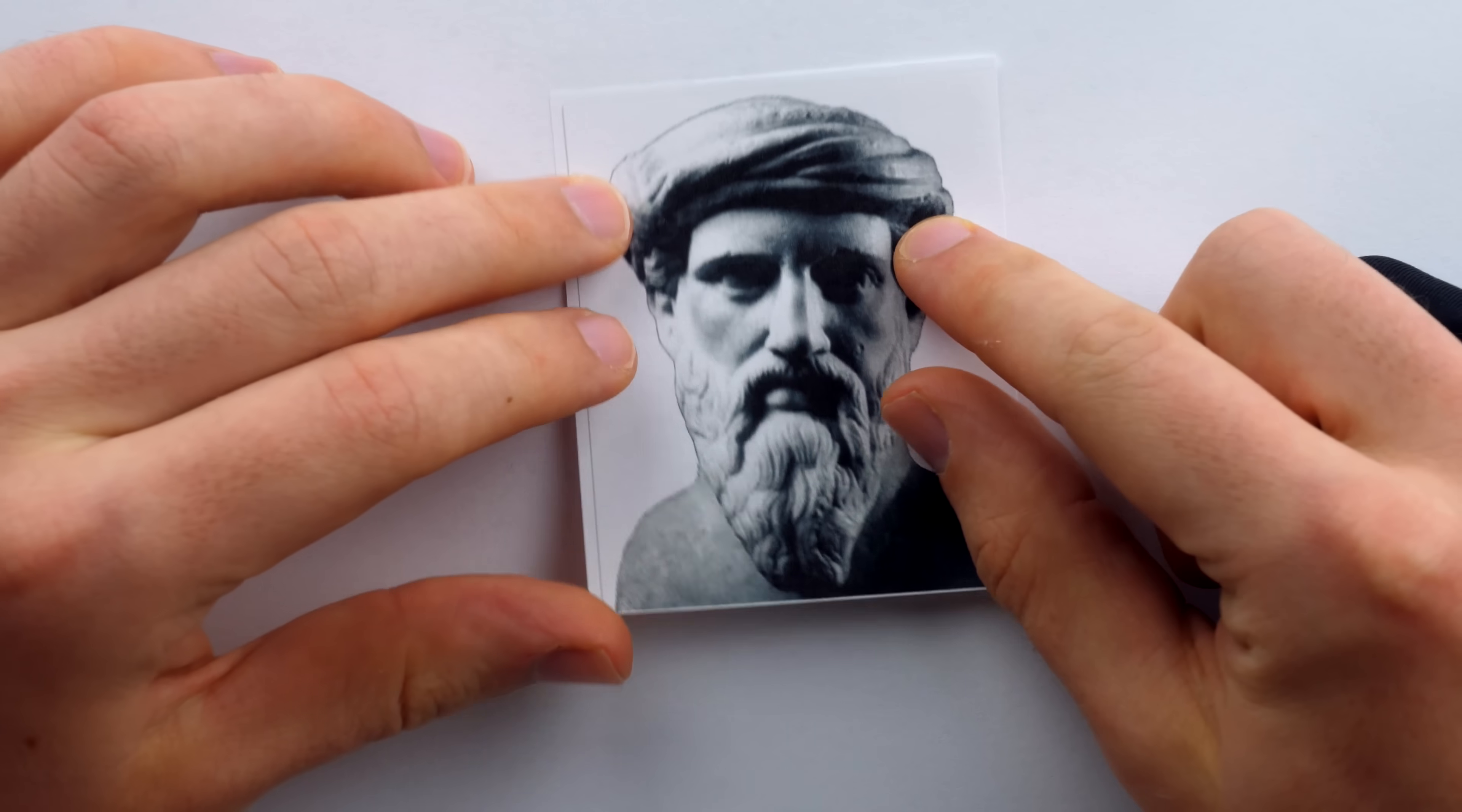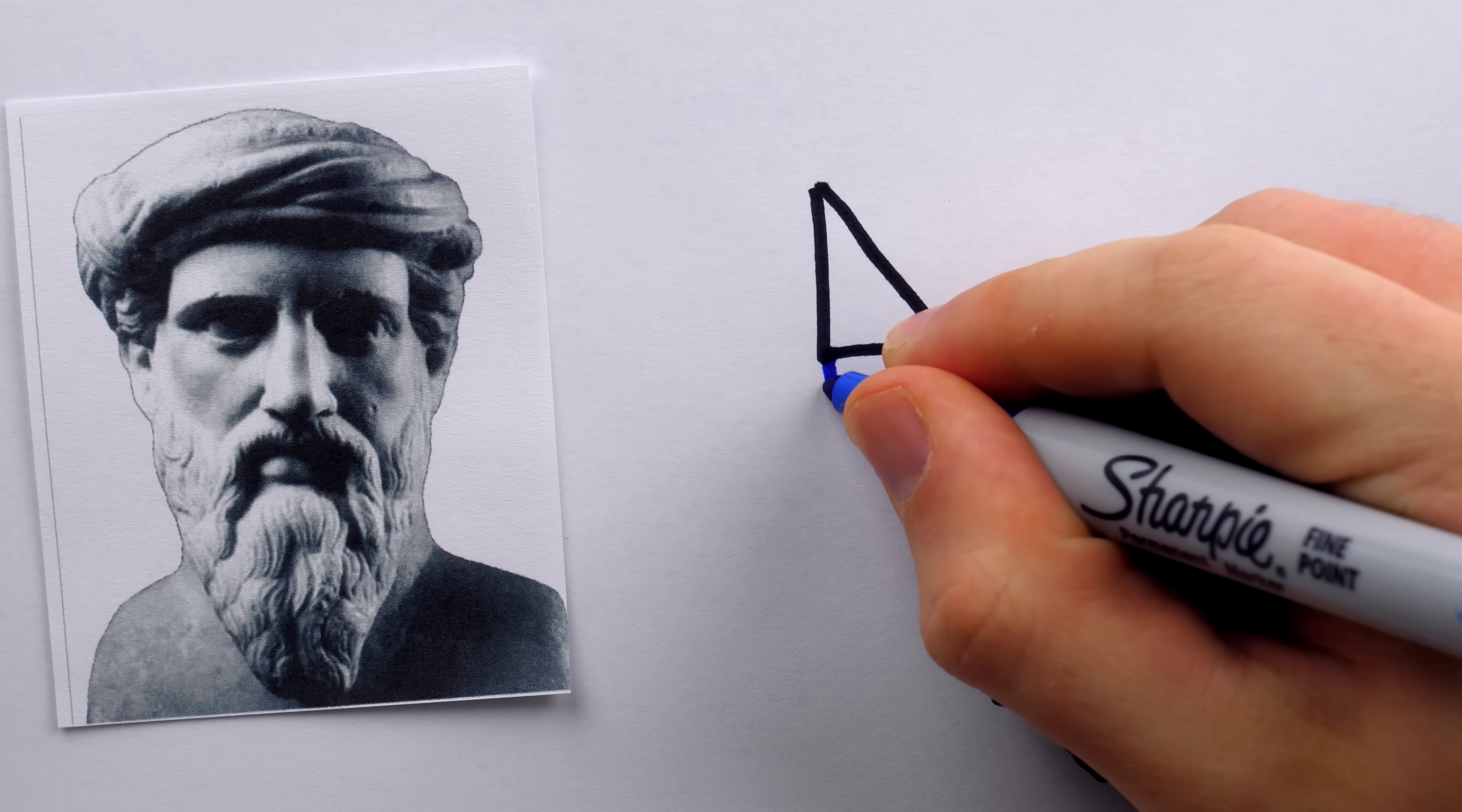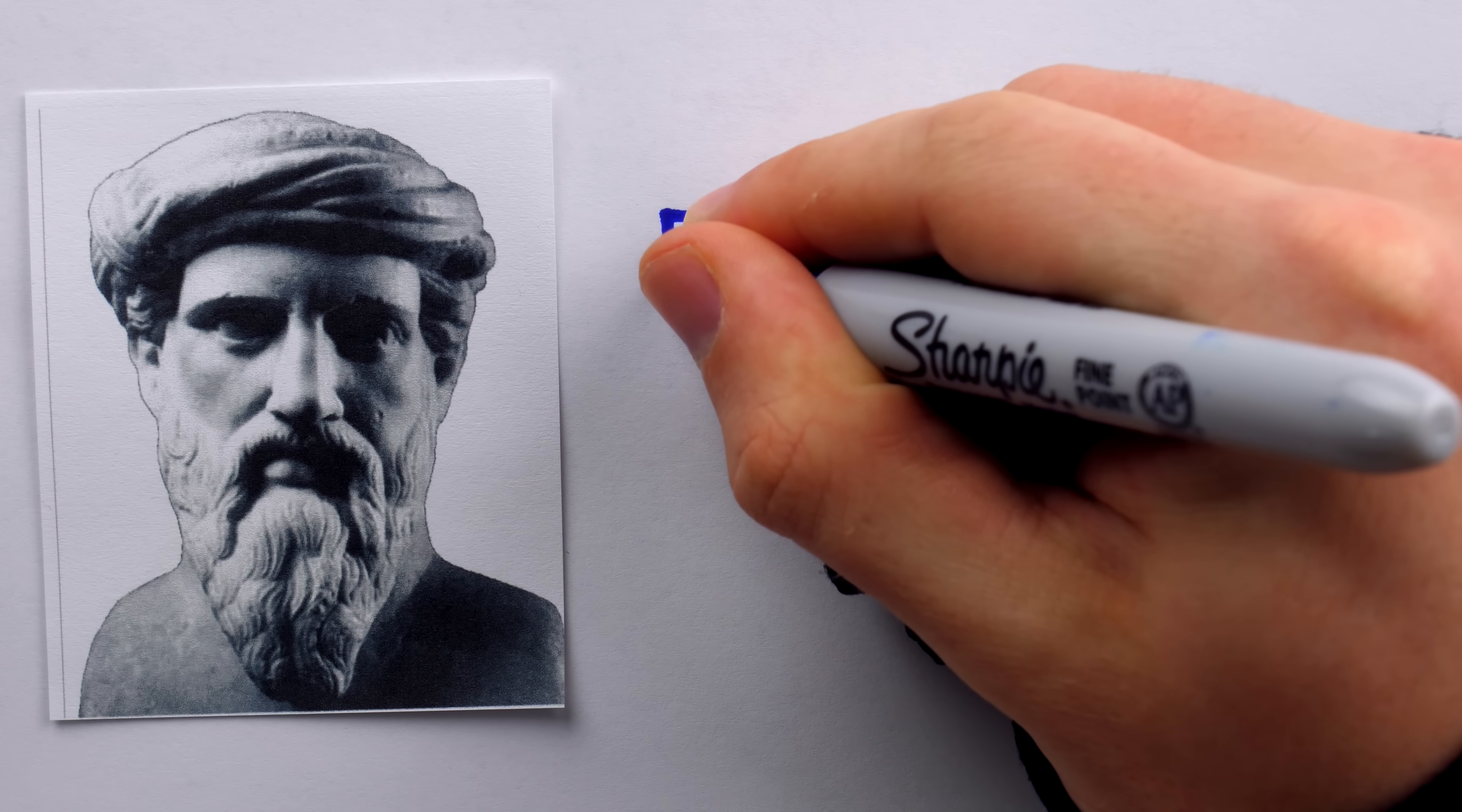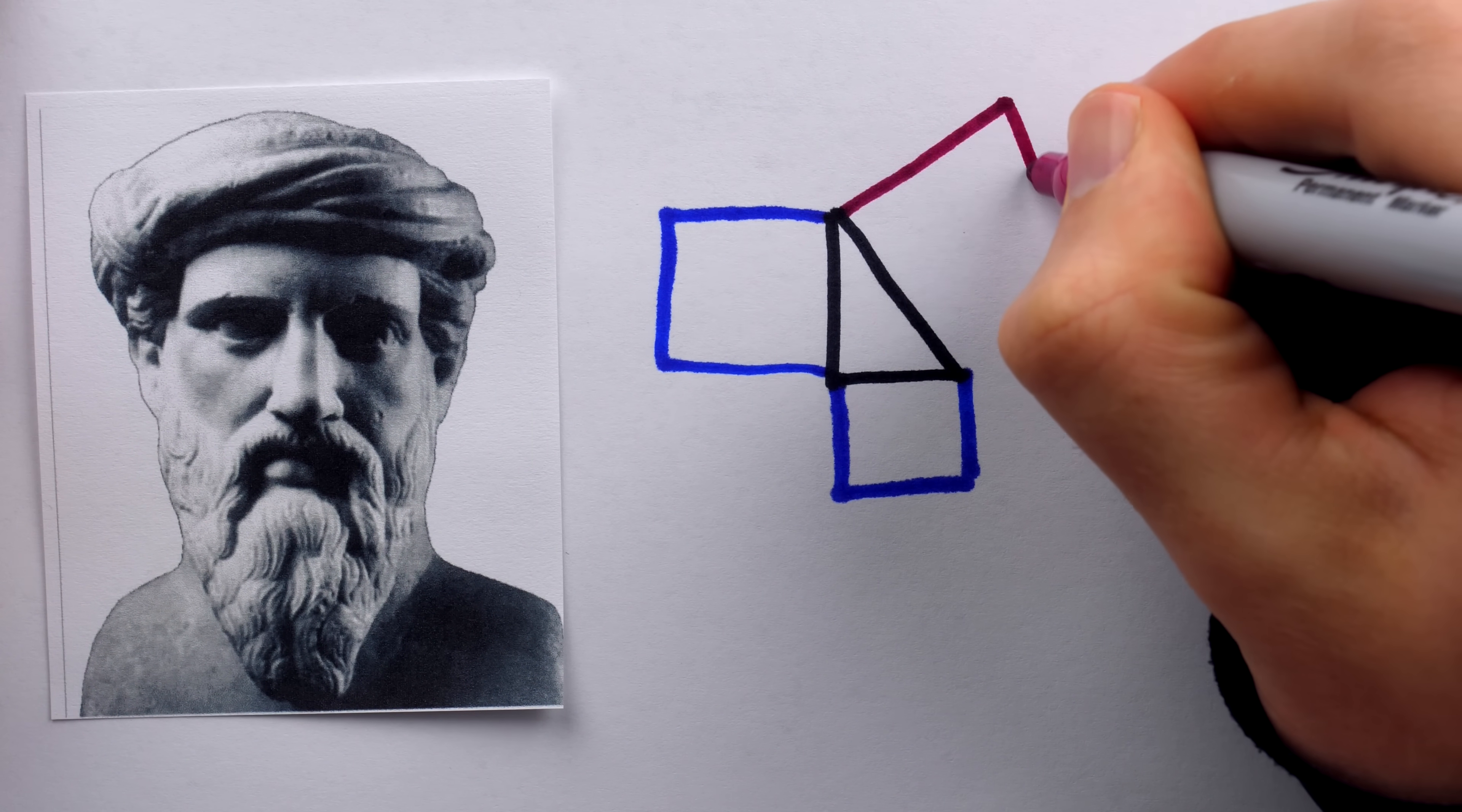Whoops, sorry, wrong guy. Pythagoras. And of course, that's because everybody knows the Pythagorean theorem, which tells us that on a right-angled triangle, the sum of the squares on the legs of the right triangle is equal to the square on the right triangle's hypotenuse.